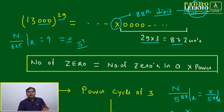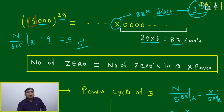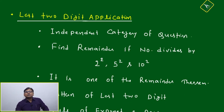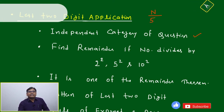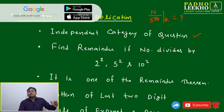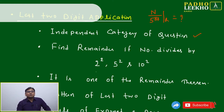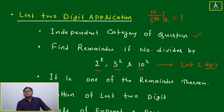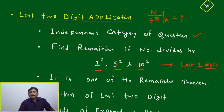The concept remains the same throughout. Number of zeros equals number of zeros in A multiplied by power — counted from the right-hand side. The first non-zero number depends on the power cycle of the base digit and the given power. To find the remainder when divided by 5 to the power 88, consider the last 88 digits: 87 are zeros and the 88th is X, equal to 3 to the power 29, found via the power cycle of 3.